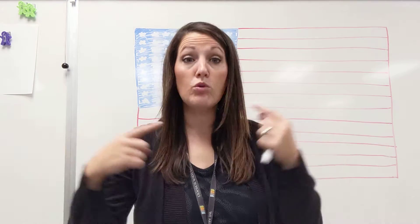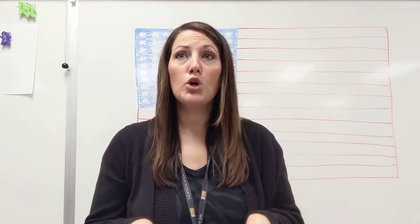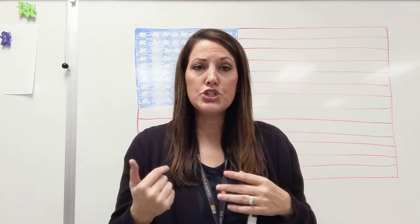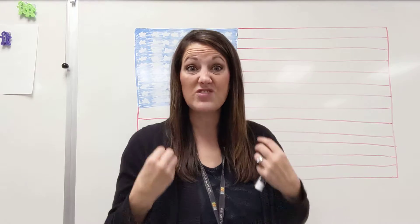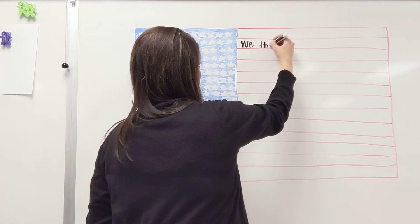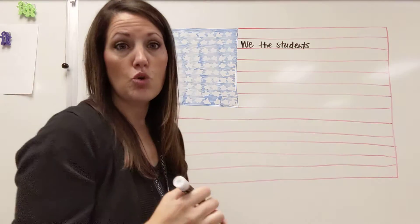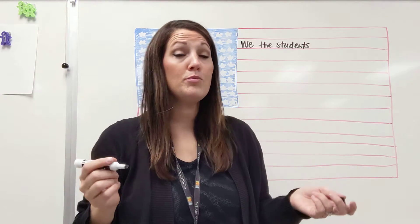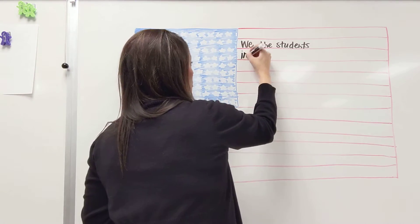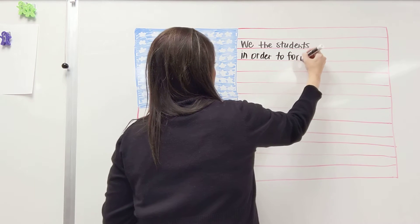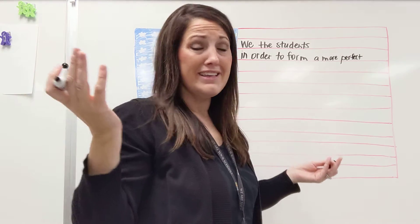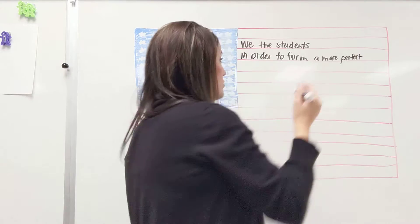So we the people, in order to form a more perfect union — what that means is we the people who are living here, us, in order to form a more perfect union. Union is like a group, so in order to be a more perfect group of people. So we're going to rewrite this so it makes sense for students. Instead of we the people, if it's for students, we might say we the students. I'm going to write our kid-friendly preamble on this flag that I drew. So: we the students, in order to form a more perfect Haley — because that's the group that we're in. Even if you're virtual, you're still a group member of Haley's school.